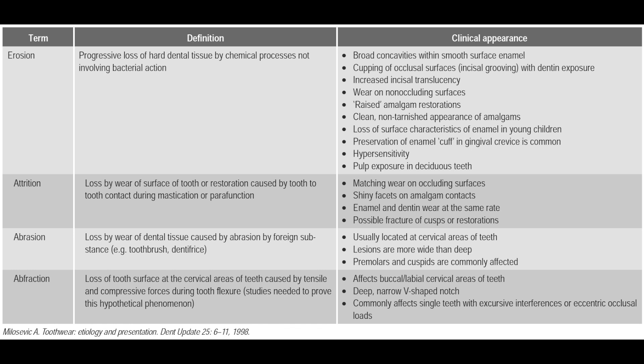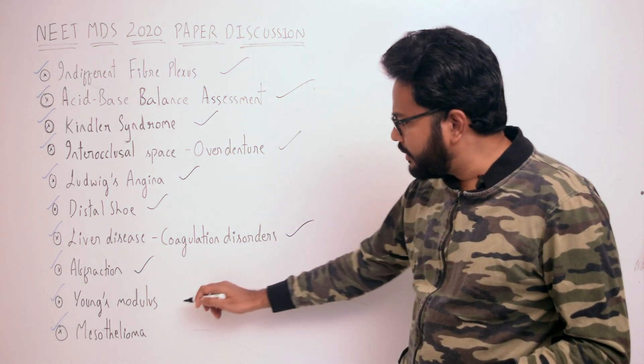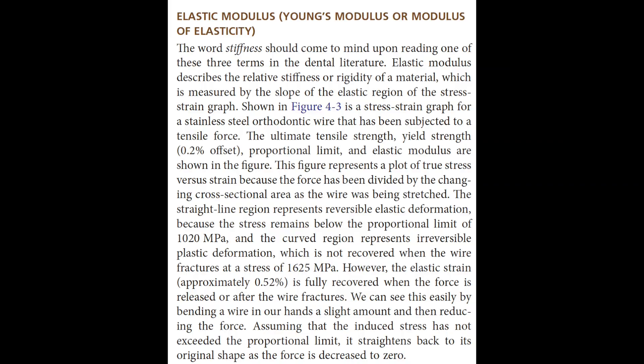Moving on to Young's modulus or stiffness, which we have discussed in our e-classes and study club. Elastic modulus, also called Young's modulus or modulus of elasticity, describes the relative stiffness or rigidity of a material. As mentioned in Phillips, it is measured by the slope of the elastic region of the stress-strain graph.